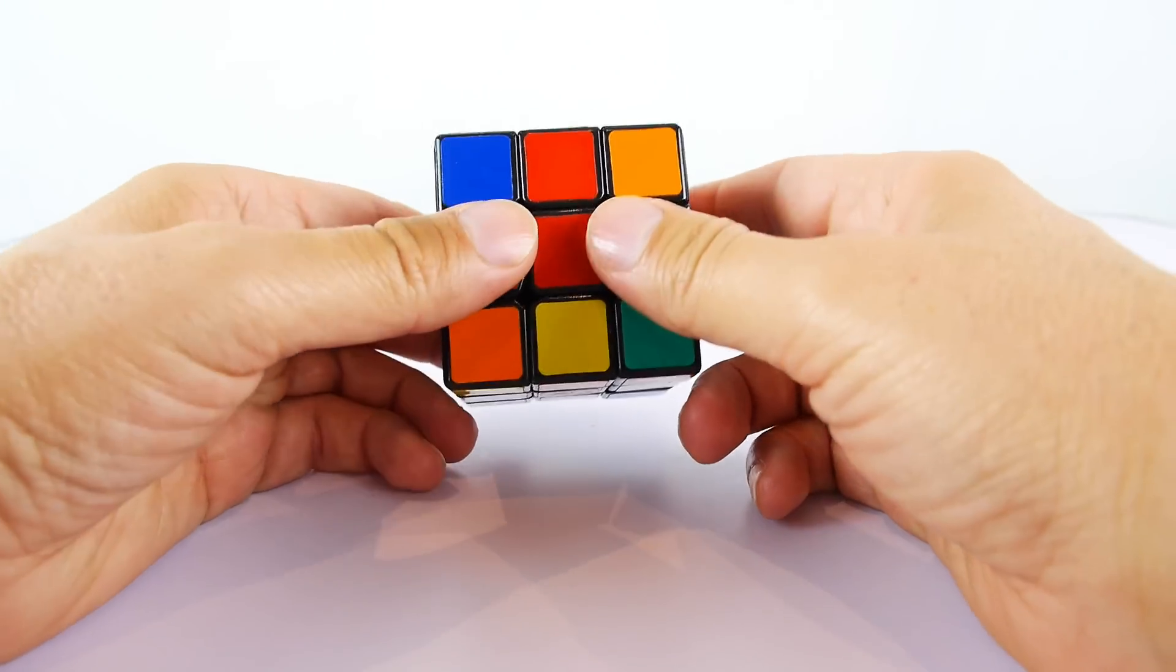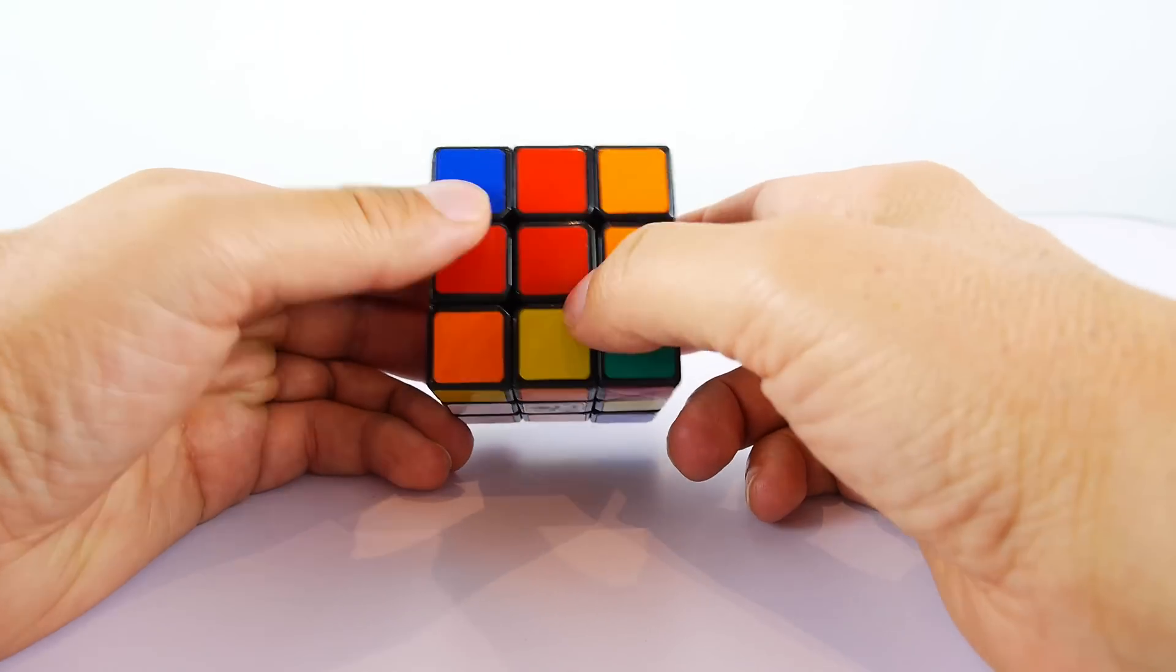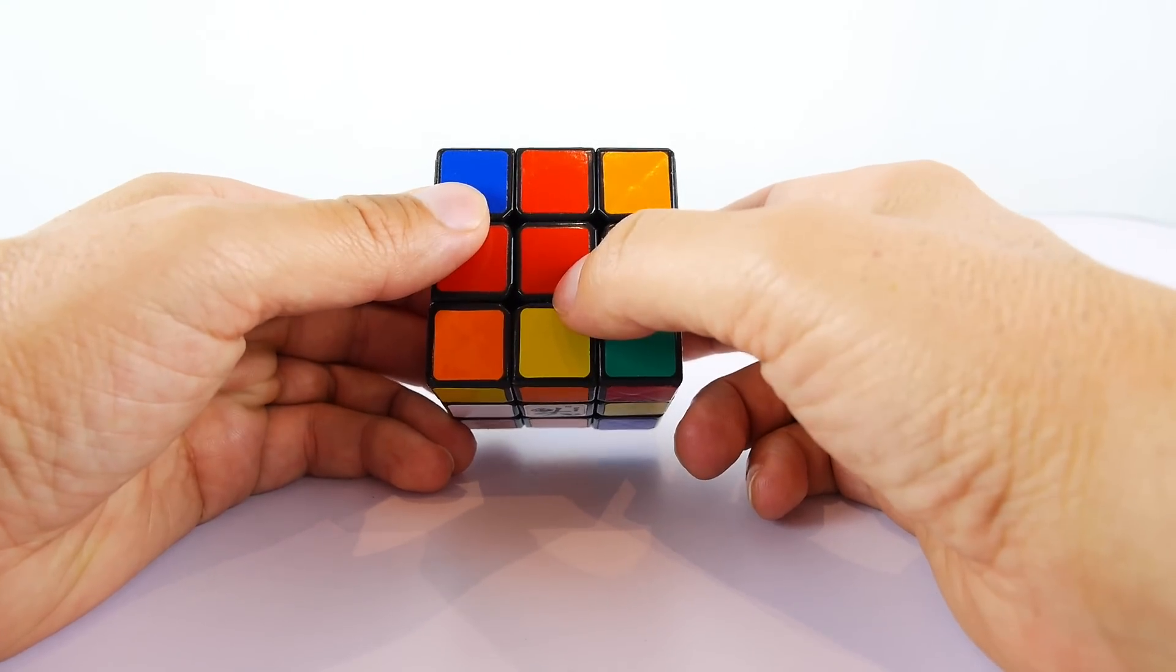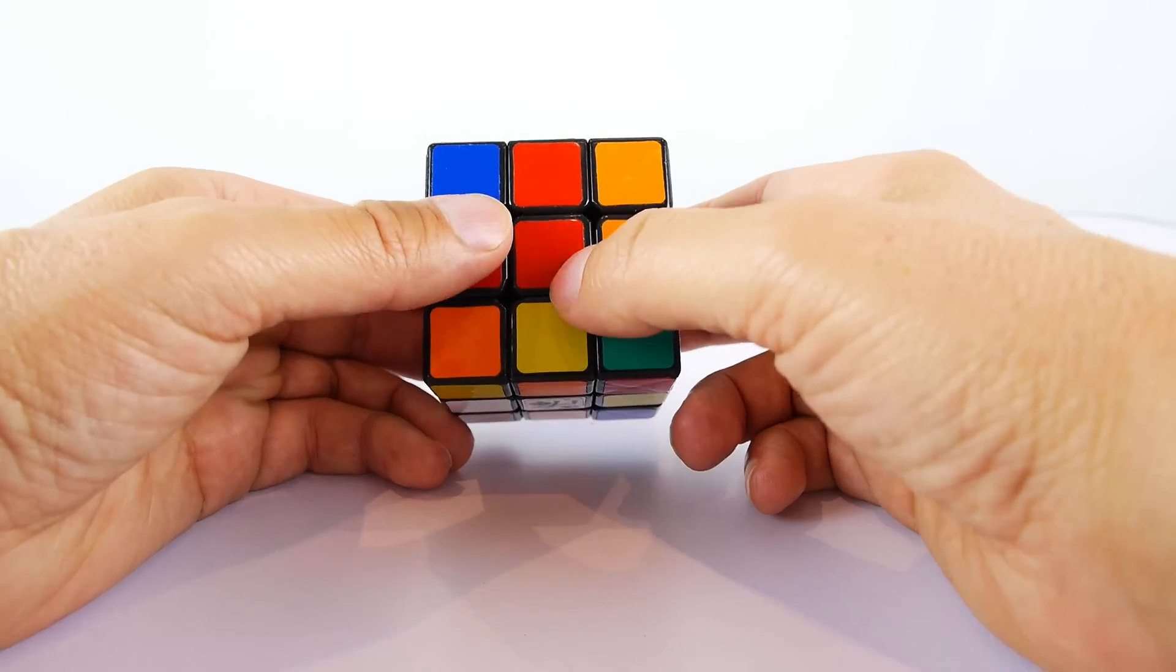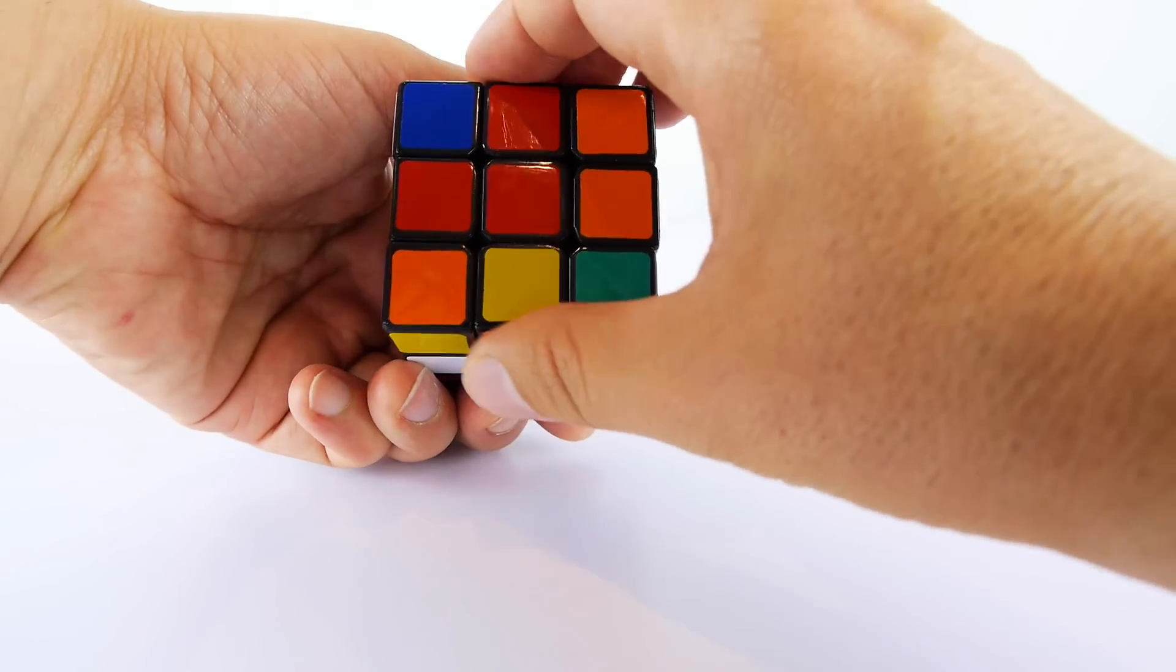Let's now go back and look at the others. We've got red here that's already been lined up with the red, so let's do exactly the same thing as before. Turn the front face forward twice.